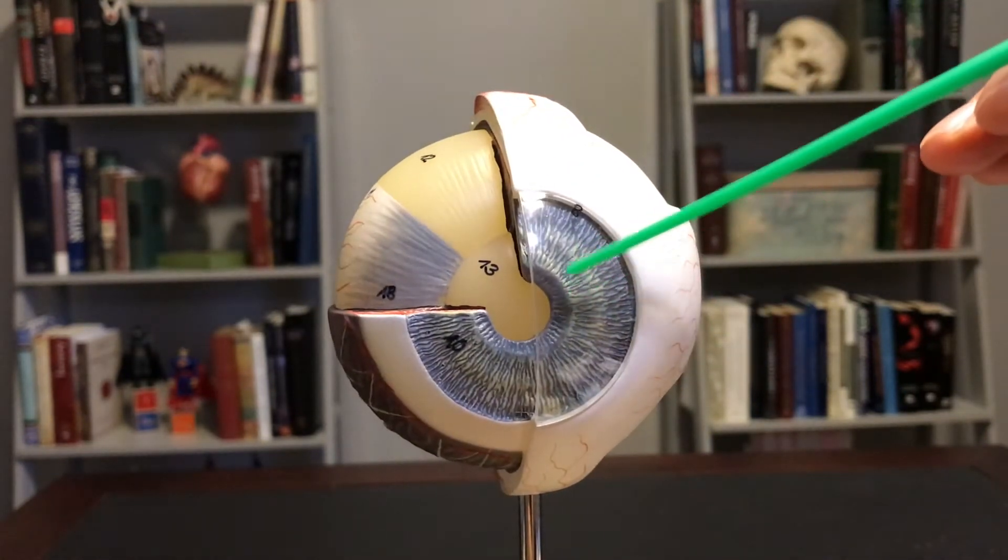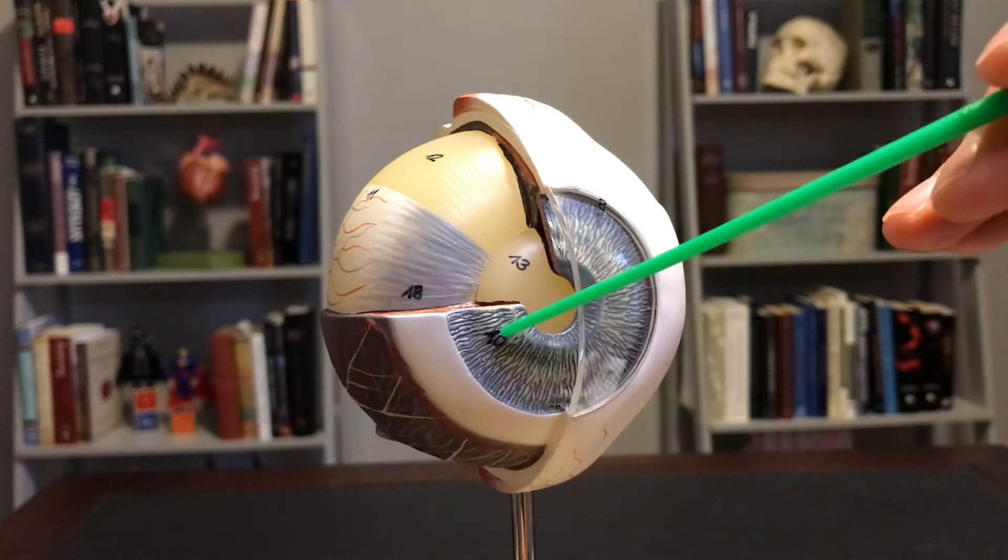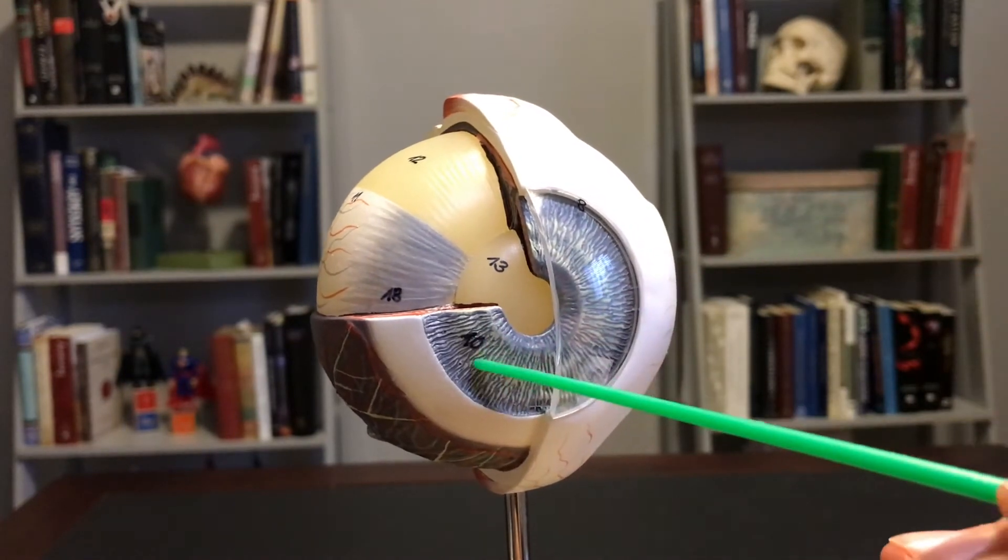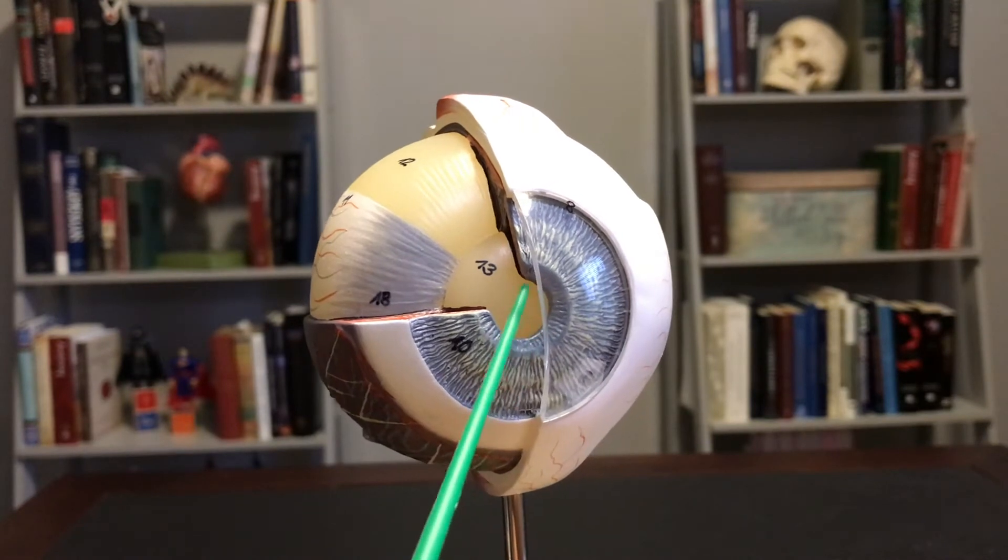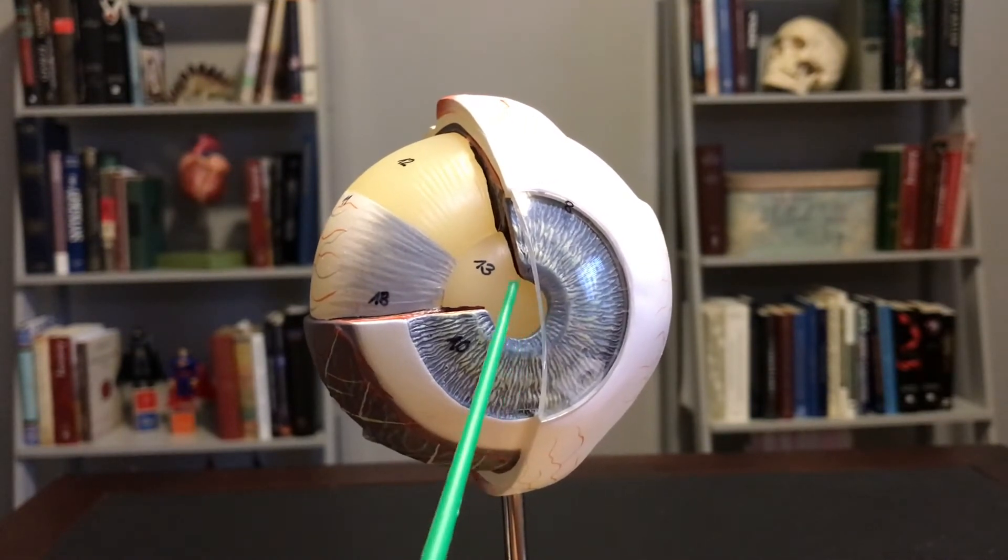Sclera of the eye, again back to the cornea. This is the iris or the colored portion of the eye. And then, of course, this is the pupil. That's that open area that the iris creates.